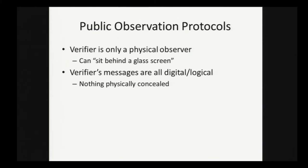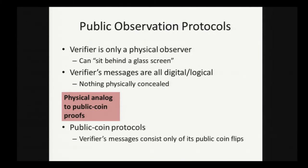This motivates the construction of what we're going to call public observation protocols. We want the verifier to be only a physical observer in the protocols. He can sit behind a glass screen during the entire protocol and send only instructions to the prover who will carry out anything physical. It's somewhat of a physical analog to public coin proofs. In public coin protocols, the verifier's messages consist only of its public coin flips. Here, there's nothing physically concealed in the verifier's messages. He's only sending instructions to a prover who carries out the instructions physically. This makes a huge difference for physical security.